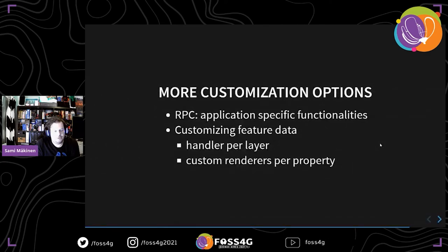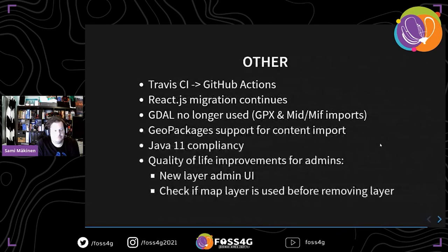Feature data can be customized per layer and renderers added per property. We also needed to think of an alternative to Travis CI and opted for GitHub Actions. The React.js migration is continuing — we've made a lot of progress. To improve the unboxing experience of Oskari, we no longer need GDAL installed alongside Oskari to have all the functionality we provide. That's about it.